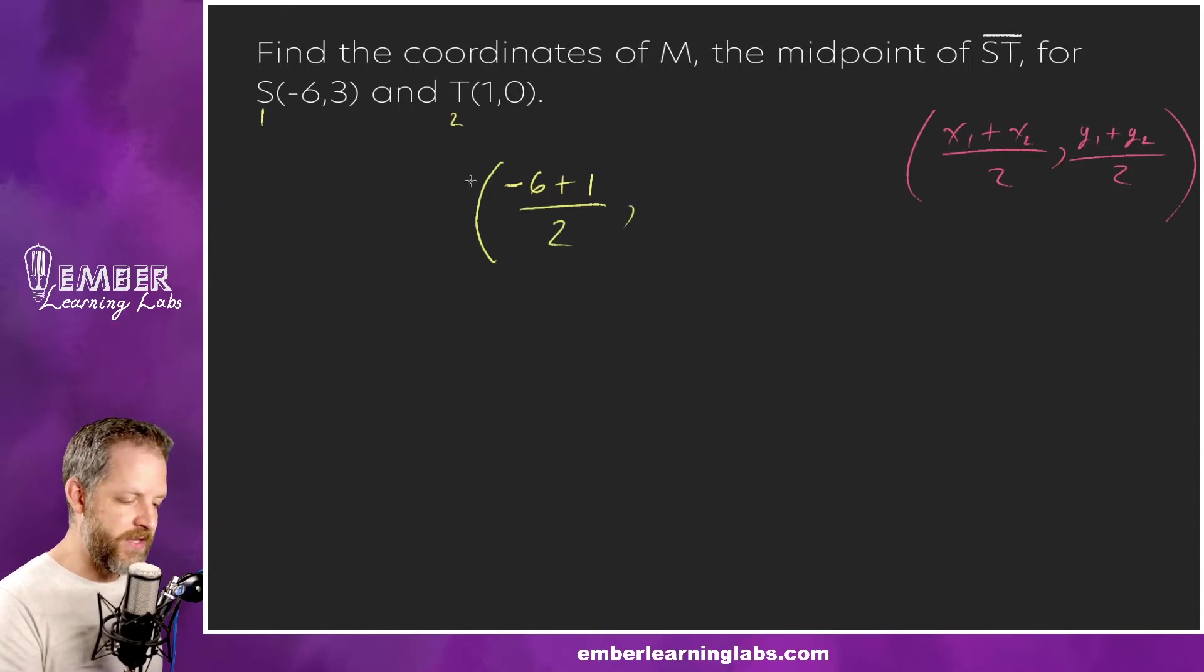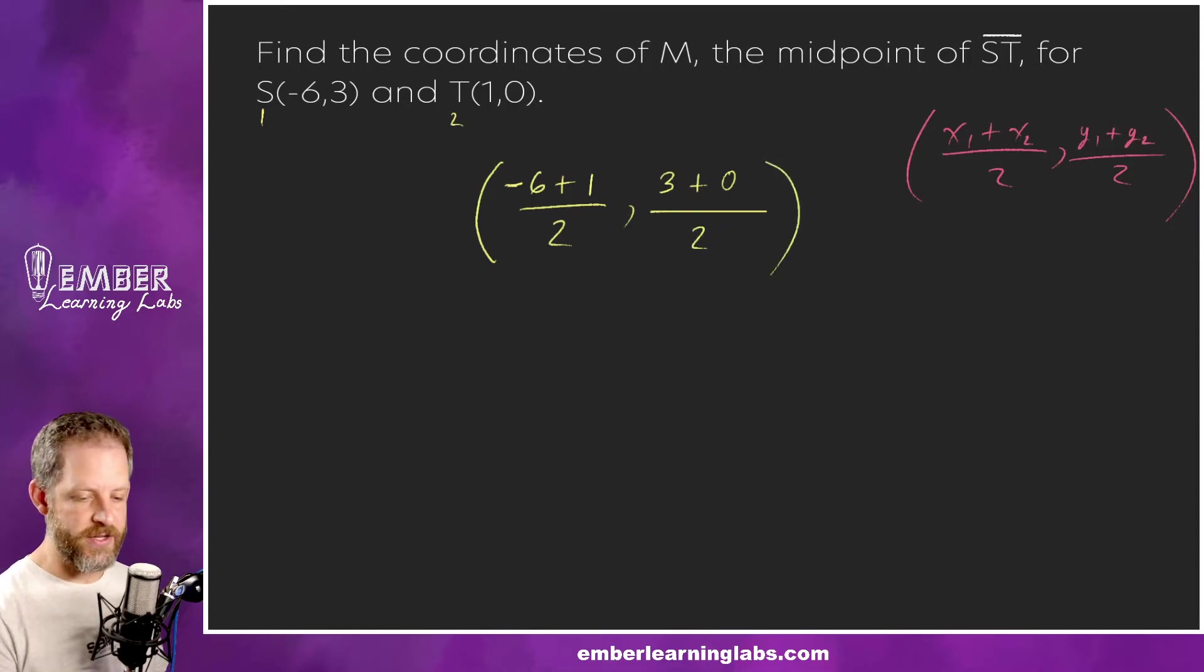And then for this next one, y1 would be three, then we're going to add that to y2 which is zero. We love zeros in problems like this because it makes our life easier. Let's plug and chug. So we're going to take, we're going to combine those top bits. Negative six plus one is negative five over two is negative five halves. You could rewrite that, we'll look at that here in a second. This would be three plus zero which is three over two, three halves.